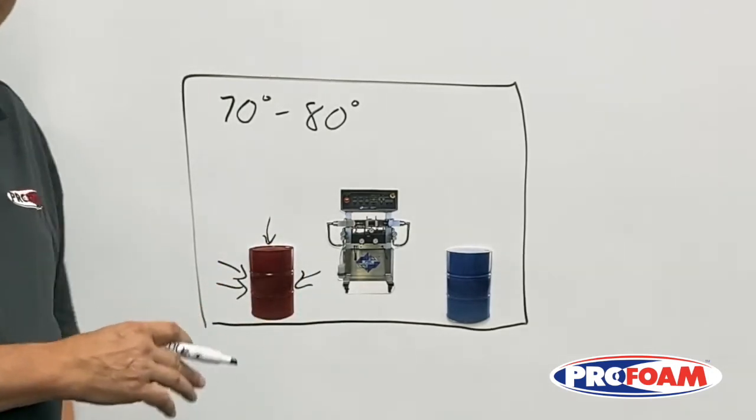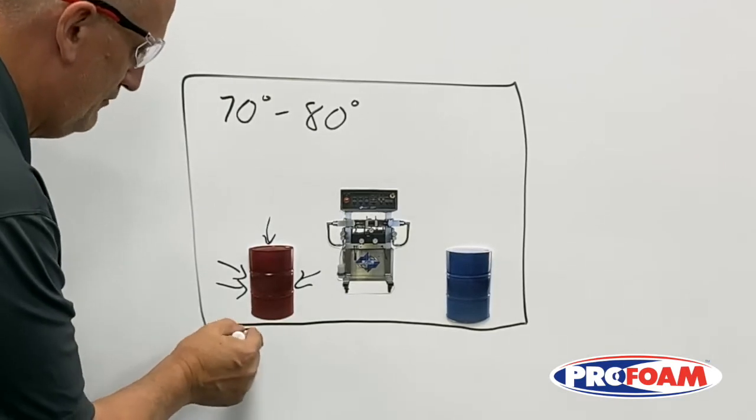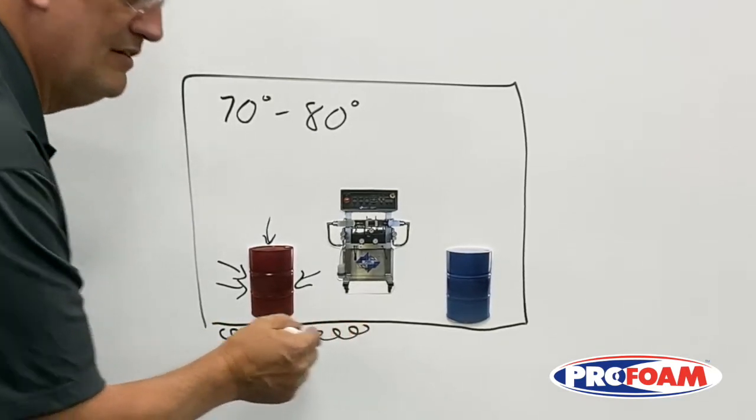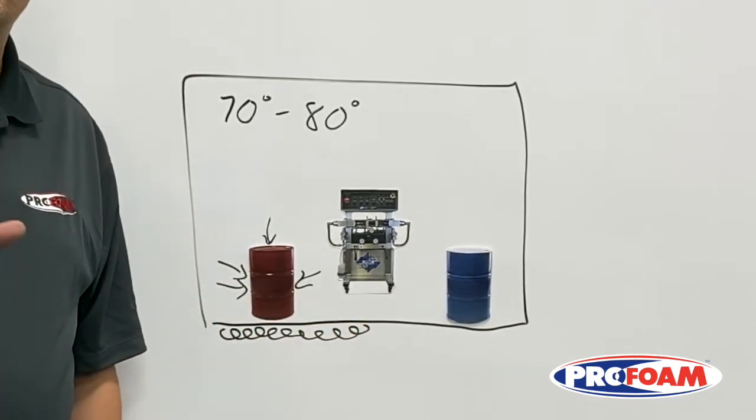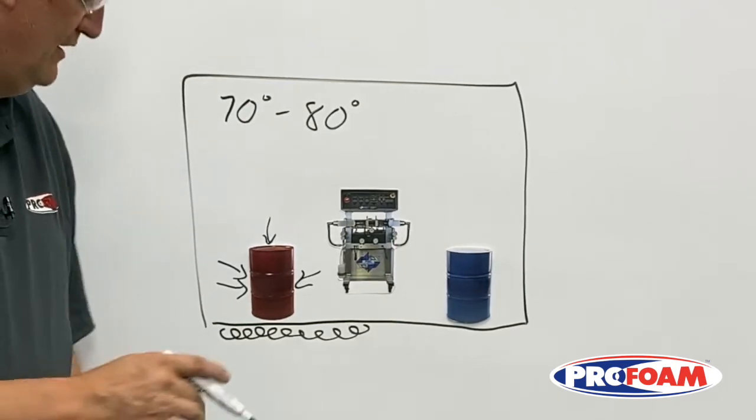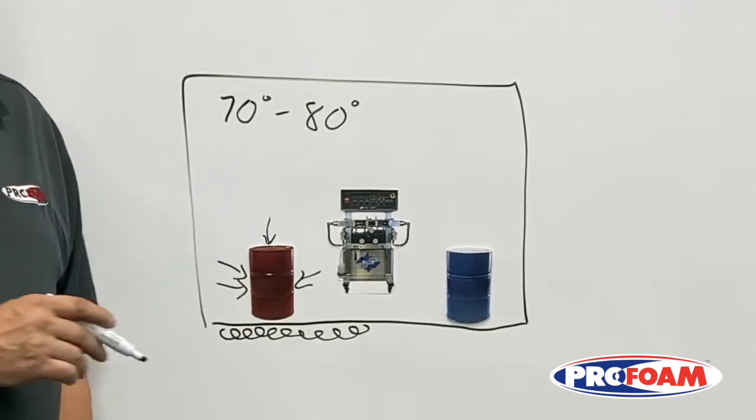If our drum is sitting right on the floor, even if there's foam insulation underneath, foam doesn't create any heat. It only slows down the transfer of heat. So right now, we're still losing heat from the bottom of the drum.